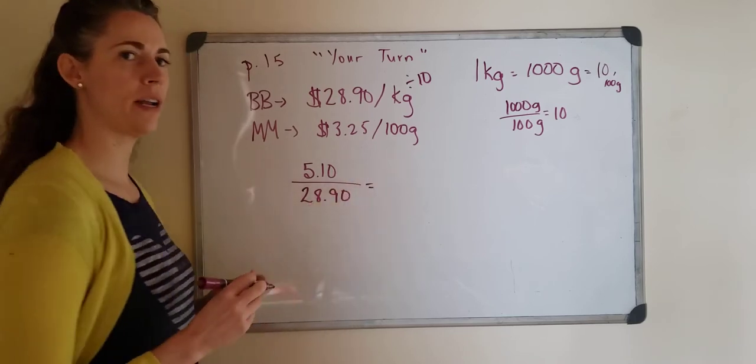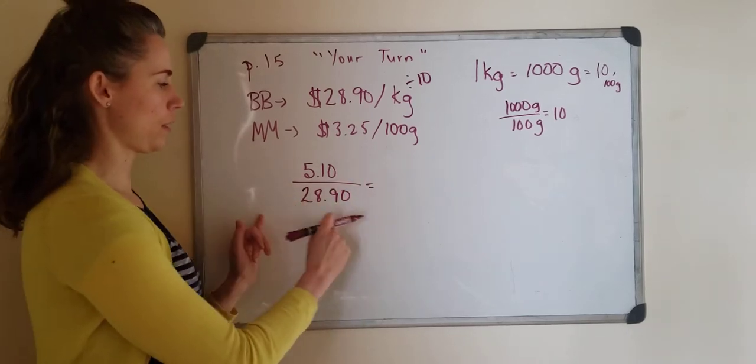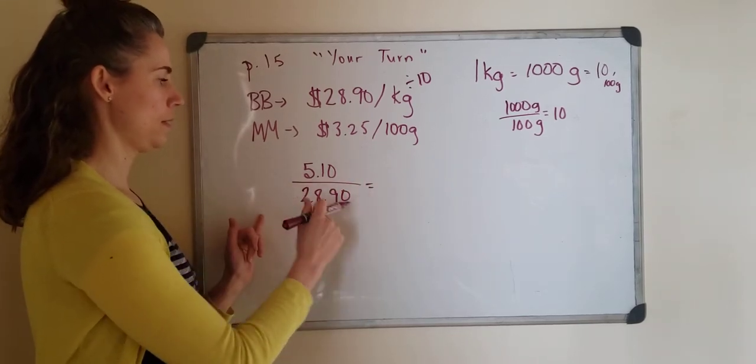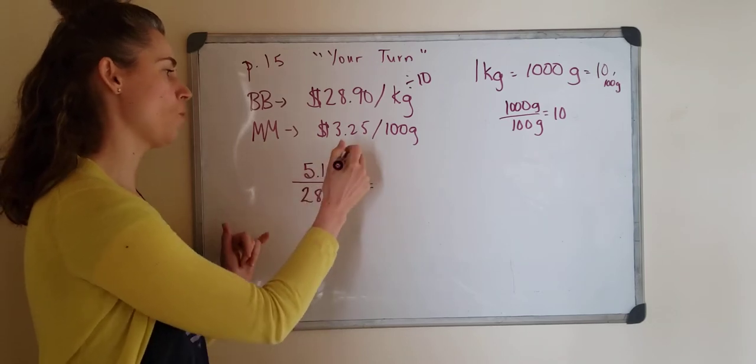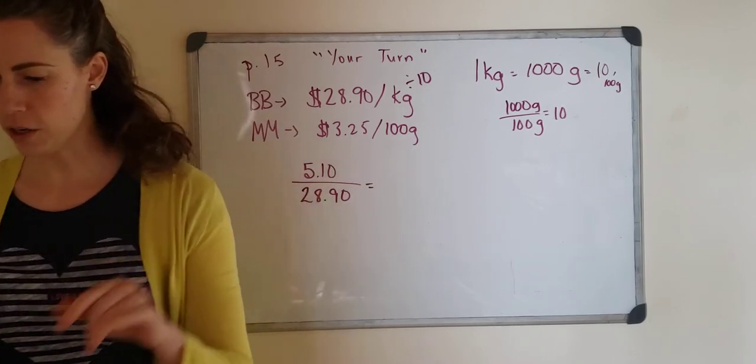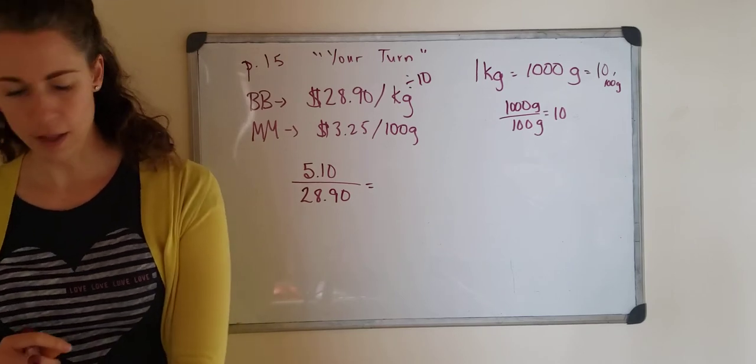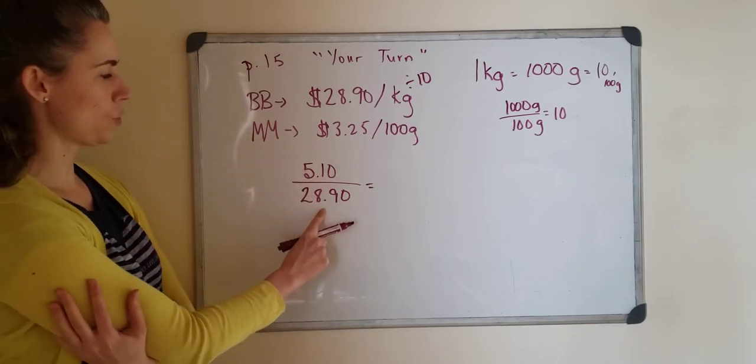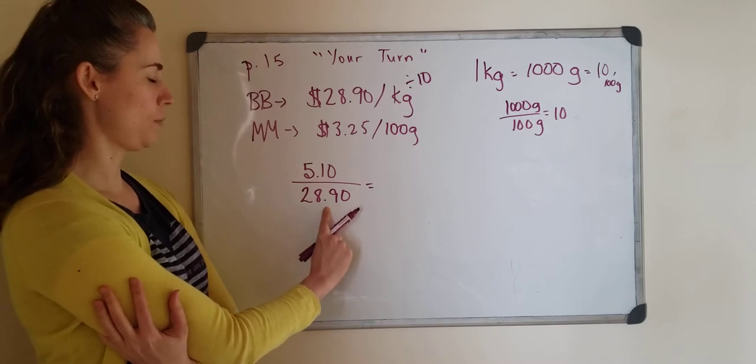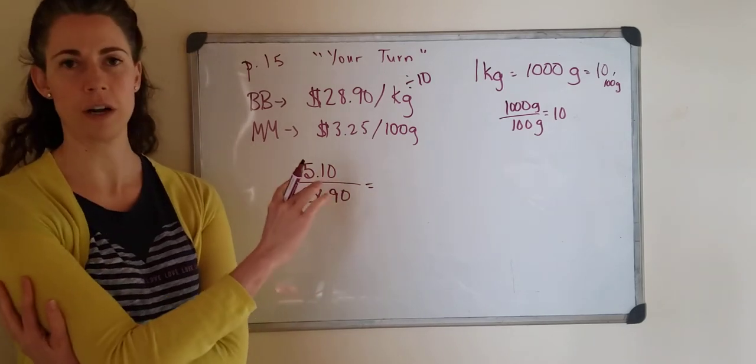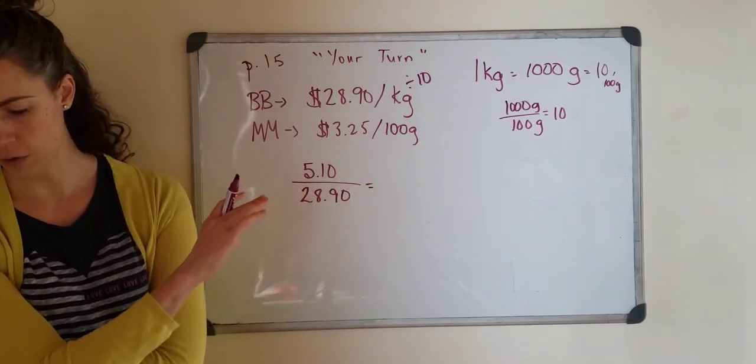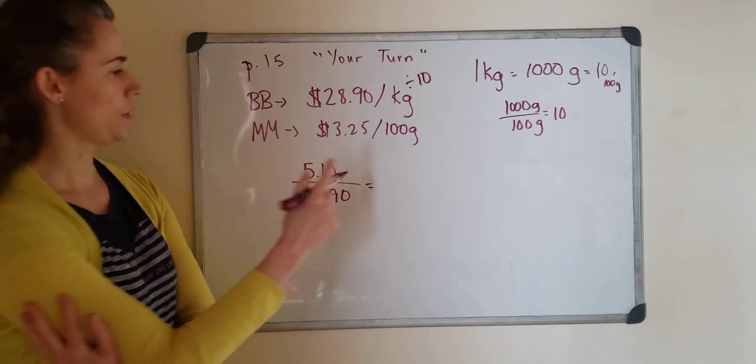We're trying to find out what percent of the total that you started with is this increase. So what percent is that increase? So on your calculator you would take 5.10 divided by 28.90. Do that in your calculator and then you will get 0.176.